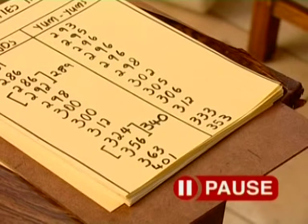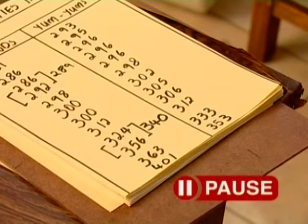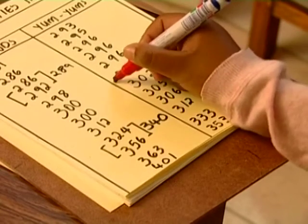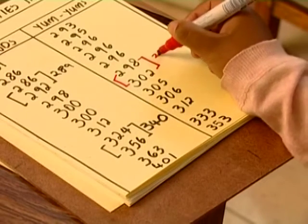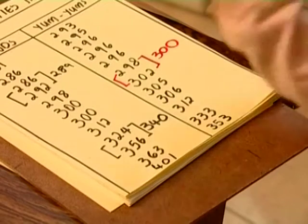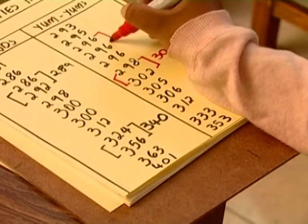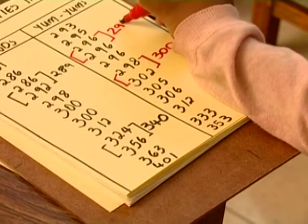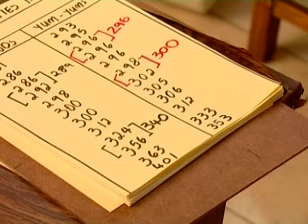Let's work out the interquartile range of the Yum-Yum patties. We've already worked out the median for the Yum-Yum masses, which was between the sixth and seventh value, giving us a median mass of 300 grams. Then I take the numbers on this side of the median and find the halfway mark — that's between the third and the fourth numbers in the set, and that's 296 grams. You've found the lower quartile, which is 296 grams.